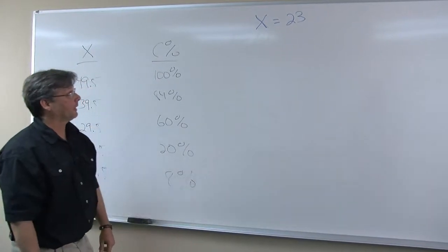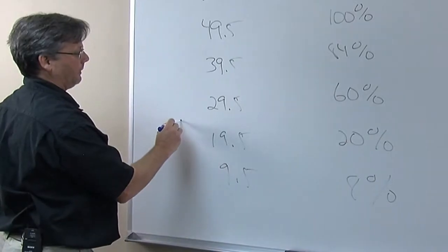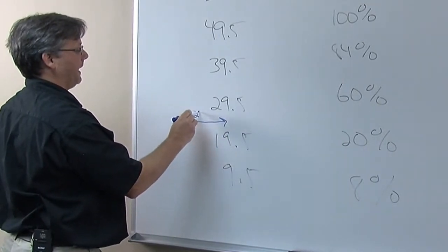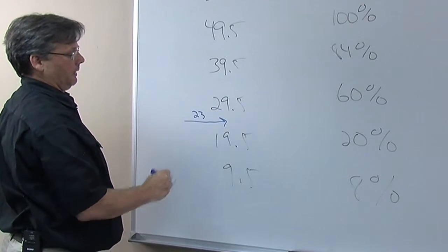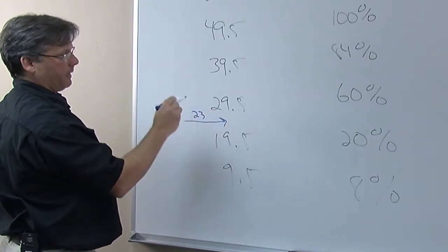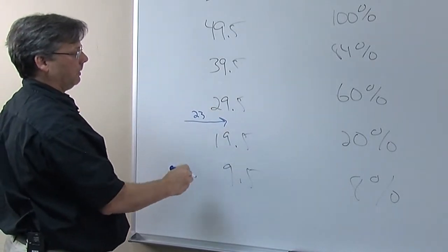As in the past, the first thing we want to do with our X score of 23 is find the sandwiching values, the values that are just above and just below our X score. So 19.5 is below, 29.5 is above, the only two adjacent numbers in this column where there's one above and one below.